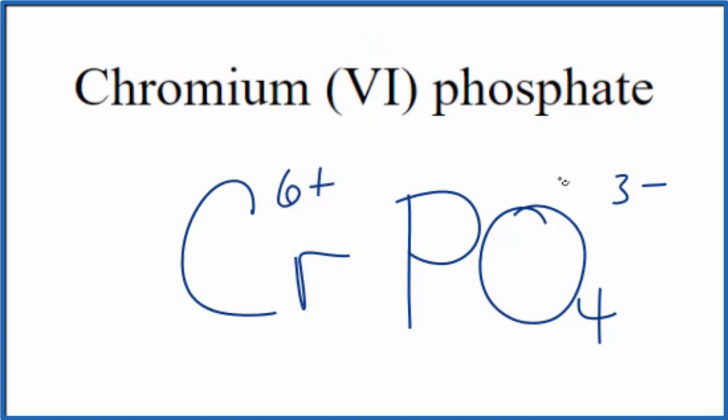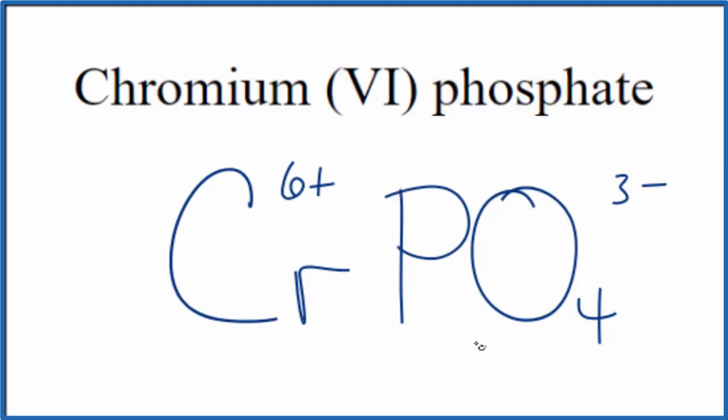So we can see if we had two of these phosphate ions, each one is 3-, that would balance the charge on the chromium. So let's put parentheses around this and put a 2 as our subscript. 2 times 3- is 6-, which would balance out the 6+. We have a net charge of 0.